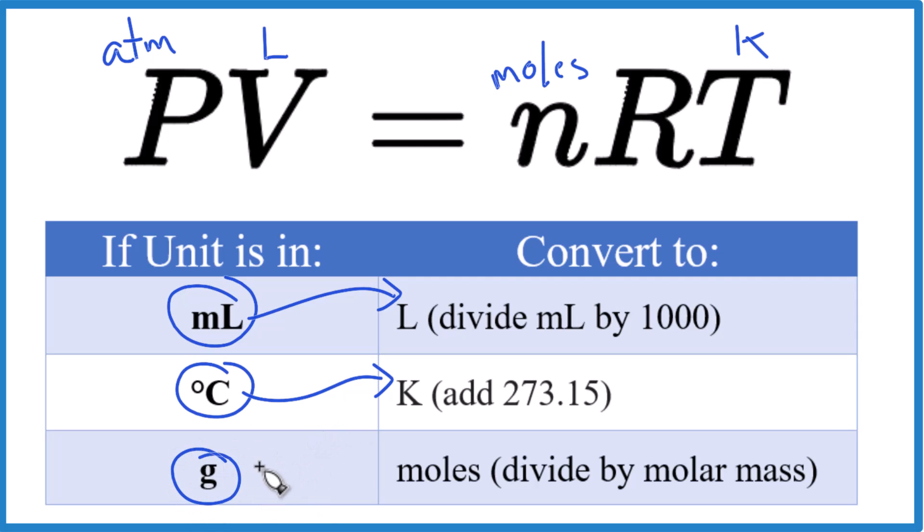Finally, grams. Sometimes they'll give you grams for a compound, say H2O or CO2. You need to get that to moles. Just divide by the molar mass of the compound.